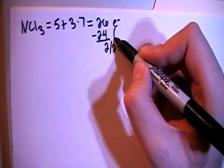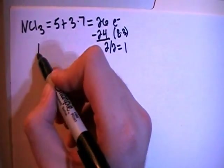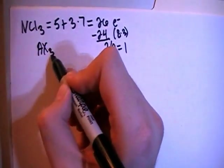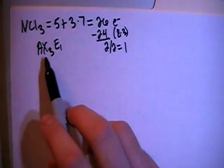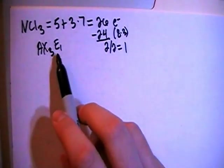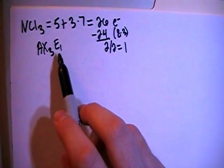And since 24 is equal to eight times three, that means that this structure is going to be an AX3E1 type structure, meaning there's a central atom surrounded by three peripheral atoms, and the central atom has one non-bonding pair of electrons on it.